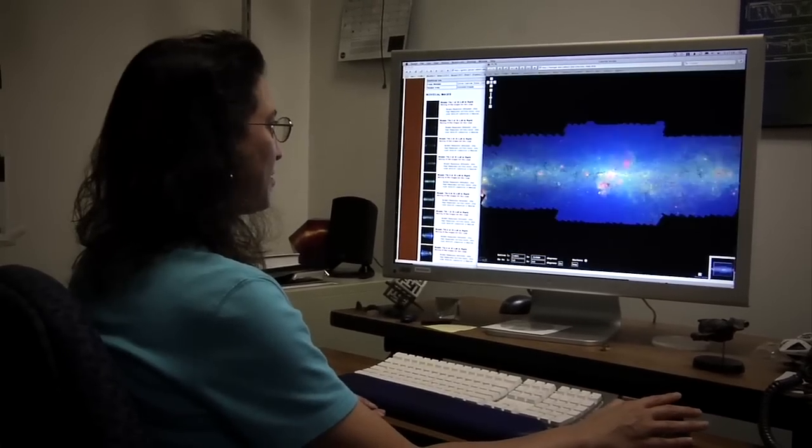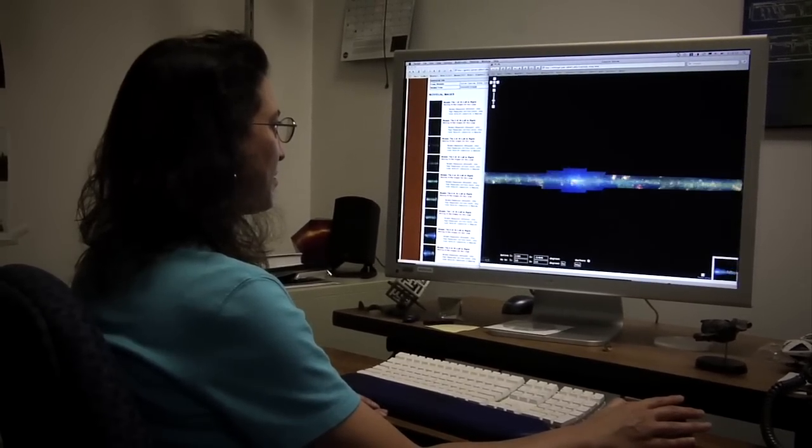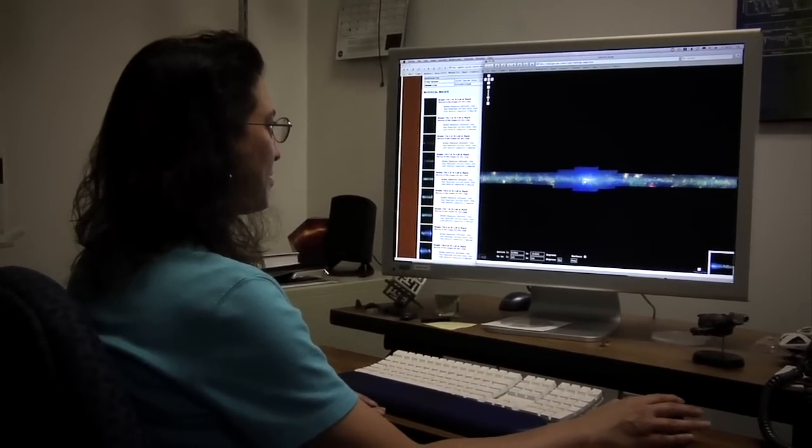If you'd like to explore Spitzer's Milky Way, all 2.5 billion pixels are available on our website. You can download the whole thing in segments, or use one of several web viewers that let you pan and zoom through the image interactively.